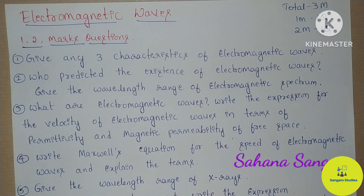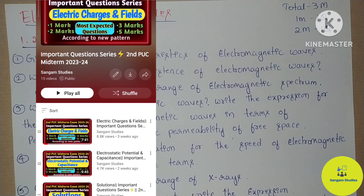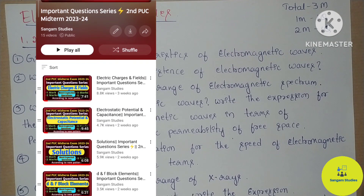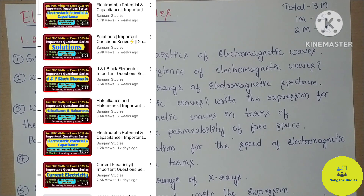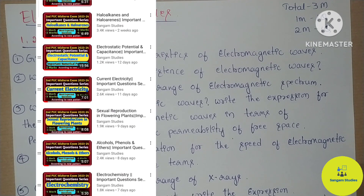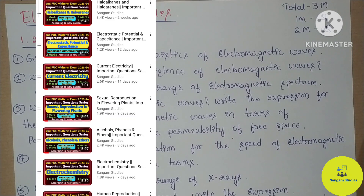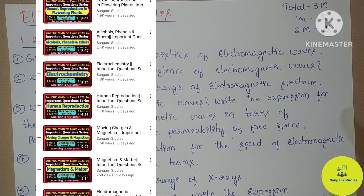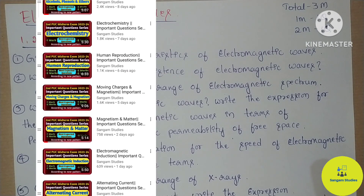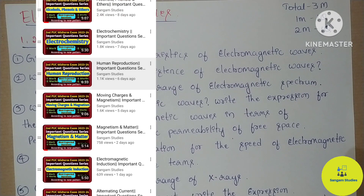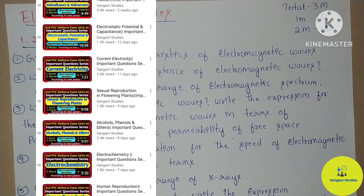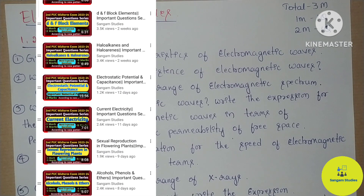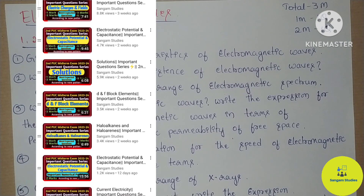Now I will start the midterm examination of the important question series. Here is physics 7 chapters, chemistry 9-5 chapters, and biology 2 chapters. Along with that, physics electrostatic potential and capacitance — each chapter also has important numerical videos uploaded. This video is made in a single playlist. You will see the playlist on the second part of the important question series, second piece of midterm exam, 2023-2024.